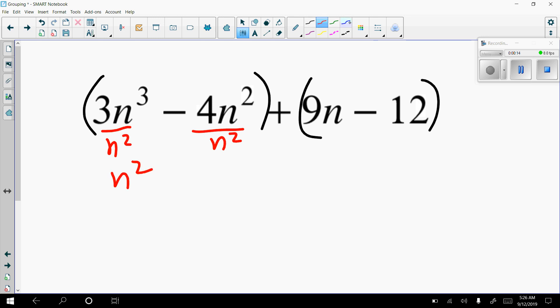So the n squared comes out front, and then we're going to be left with 3n minus 4. I'm going to bring down the plus sign.